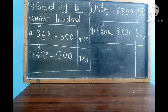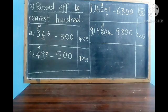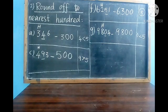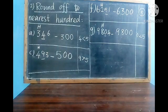G sum: 8 is in the hundreds place and 0 is in the tens place. 0 is less than 5, so we do not change the hundreds place. Our answer is 9800.